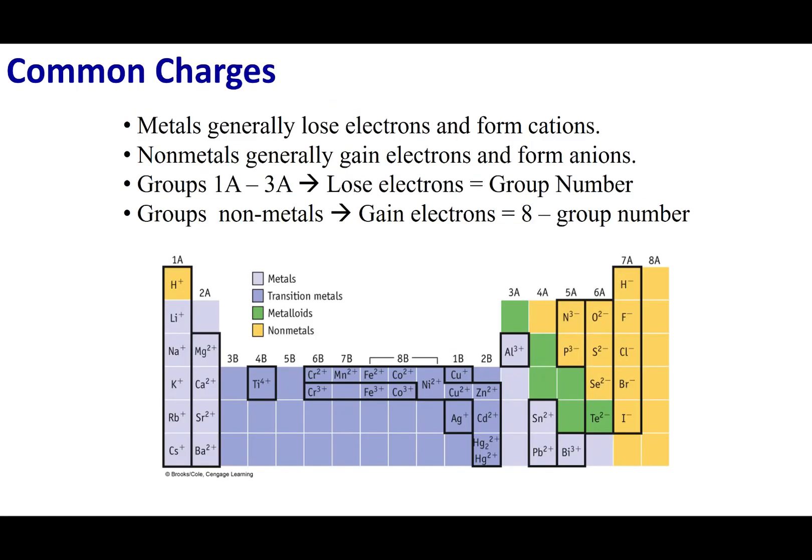I want you to memorize some common charges. I don't want you to memorize all of them but it'll make life easier if you start to recognize patterns. When we talked about sodium, potassium is going to behave the same way. It's easier for it to lose one electron than to gain seven. The first column in the periodic table likes to lose one electron and become a positive one ion. The common charge for this first column is plus one.